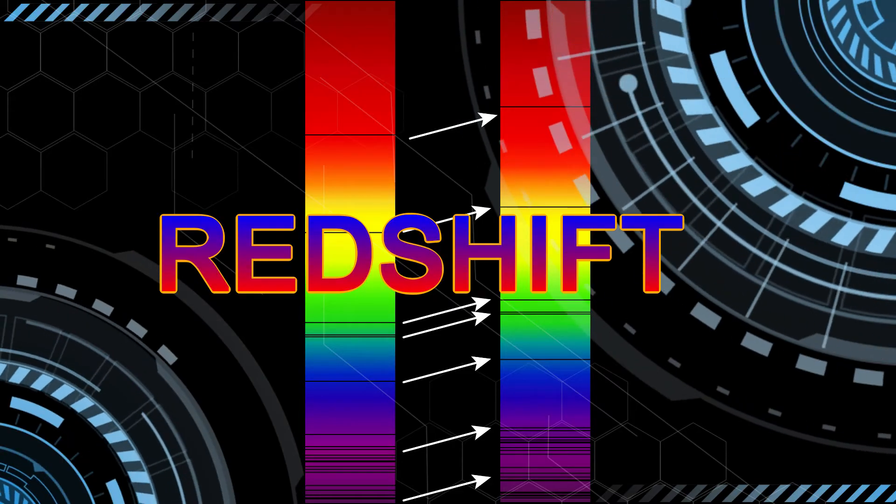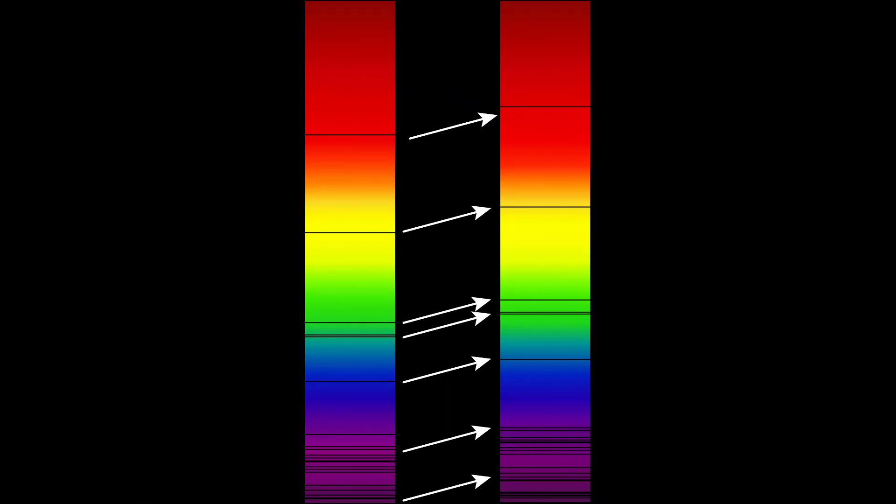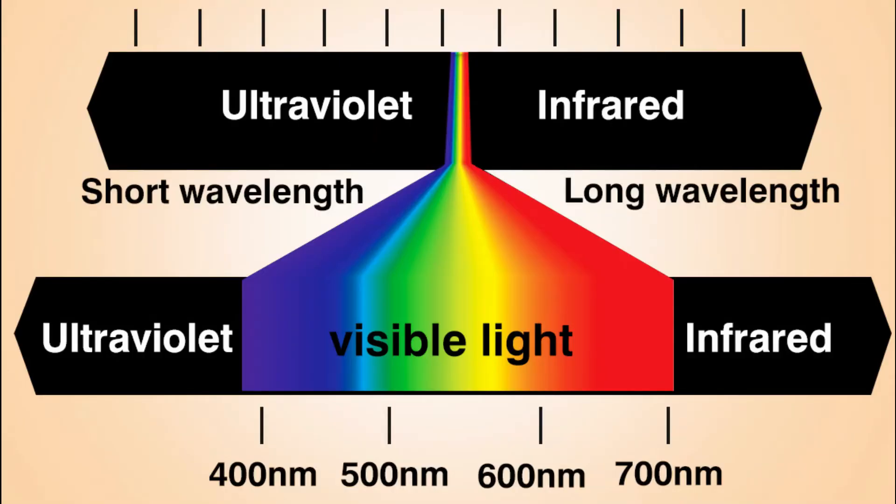First, we need to have a little look at spectroscopy. Now, spectroscopy is the detailed study of light from an object, and it is a very important tool in astronomy.